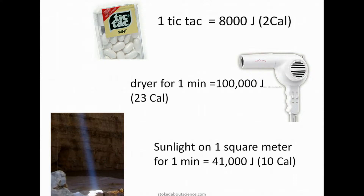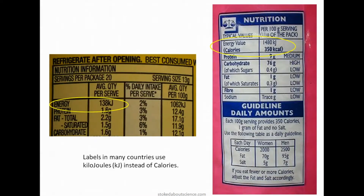Here are some examples to give you a better feel for joules. A tic-tac, which is about two calories, has 8,000 joules. Running a hair dryer for one minute is about 100,000 joules. Sunlight on a square meter for one minute is about 41,000 joules. Food labels from other countries list energy content in kilojoules — so 138 kilojoules would be 138,000 joules. Some labels list both kilojoules and kilocalories, which are uppercase food calories.